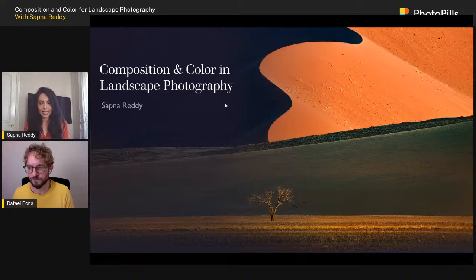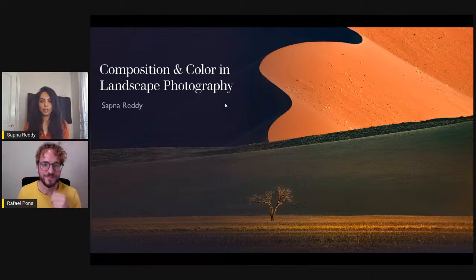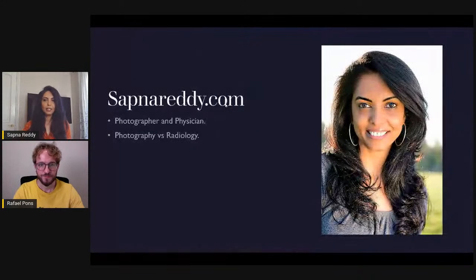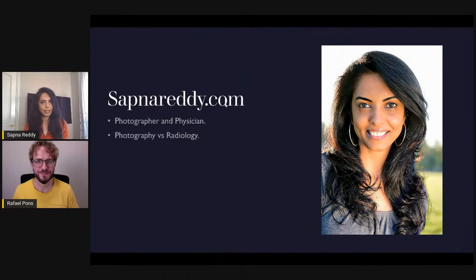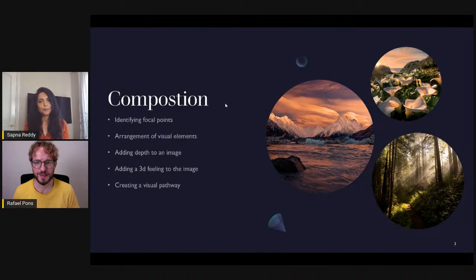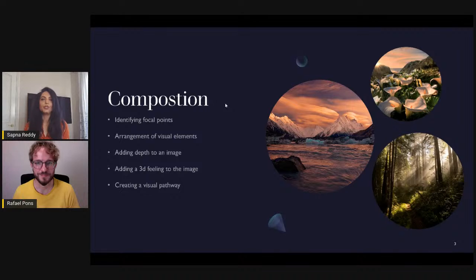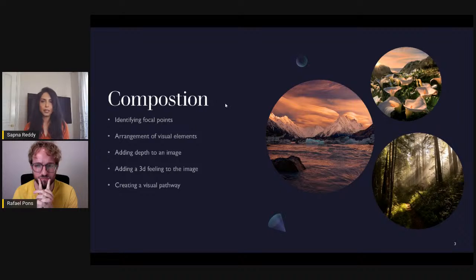Let's start with composition and color in landscape photography — probably the two most important elements. Under composition, I want to cover: how to identify focal points or visual elements; what is the story about, who is the protagonist of your visual story; and then how to arrange those visual elements in an aesthetic fashion, because that is what composition is all about.